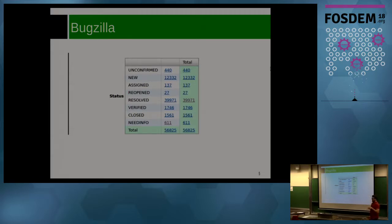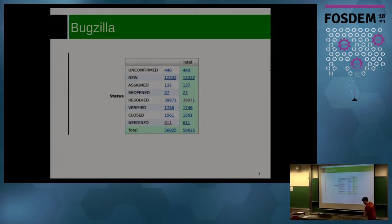It's difficult to summarize Bugzilla one year in a presentation, so I'm going to use a lot of charts, a lot of pie charts. Maybe it's not the best approach, but I'm not sure how to present this kind of information otherwise.